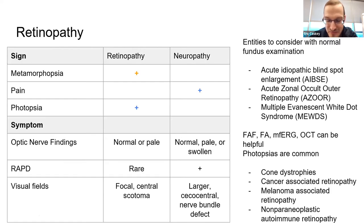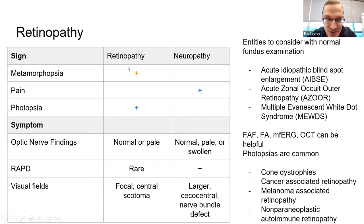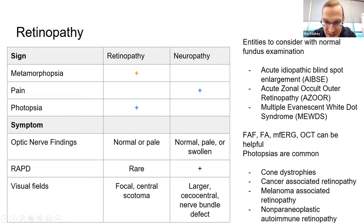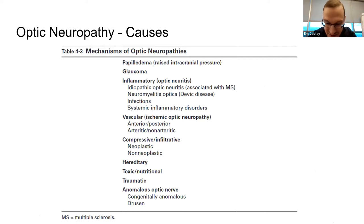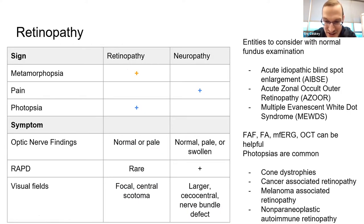They love to ask about super-rare things on OKAPS as well as in boards. Sometimes you have a pretty normal examination but the patient is having visual acuity loss, photopsias, or metamorphopsias. Be aware of your white dot syndromes as well as some of the retinopathy-type conditions that can be confusing in the question stem — don't miss retinopathies that can appear pretty normal on examination.